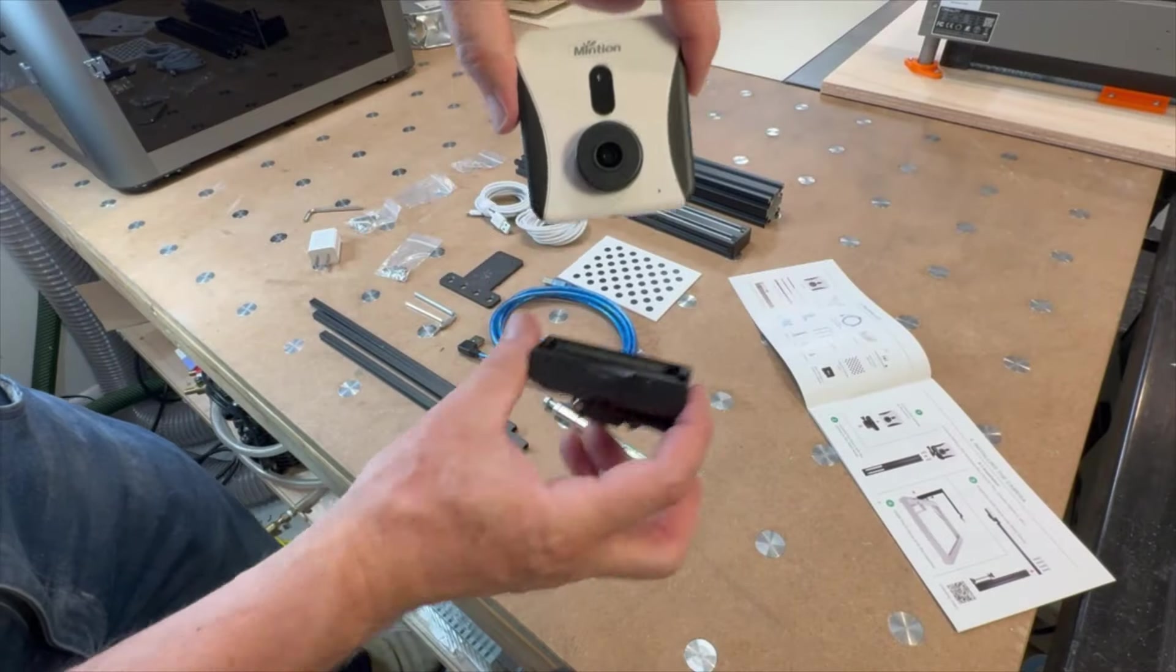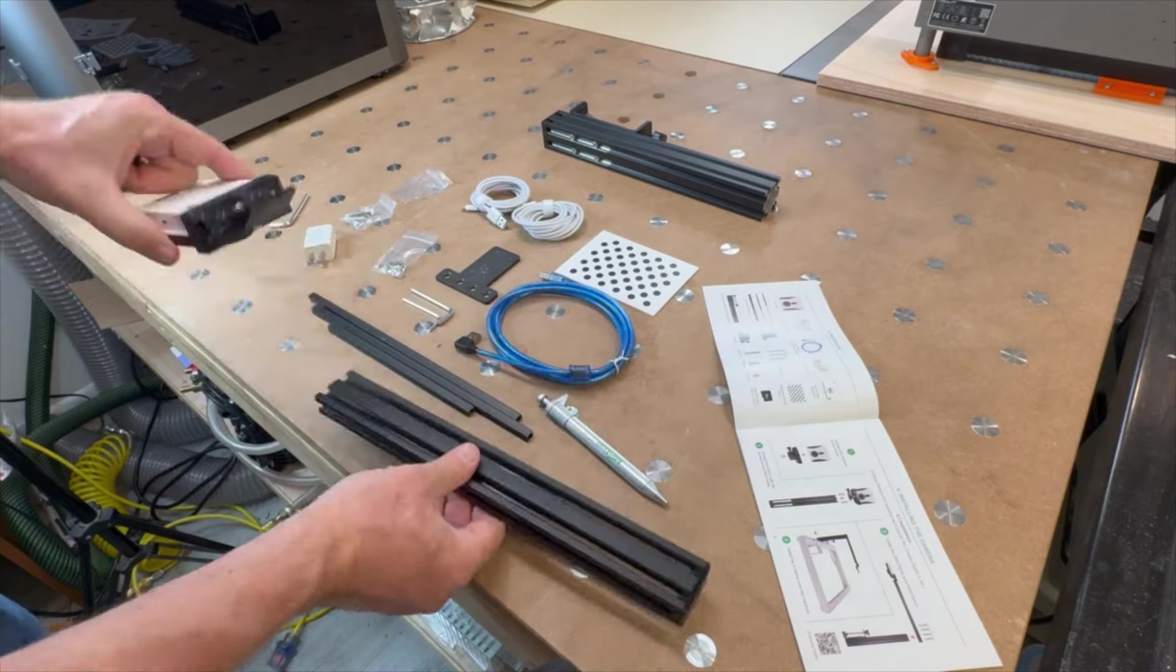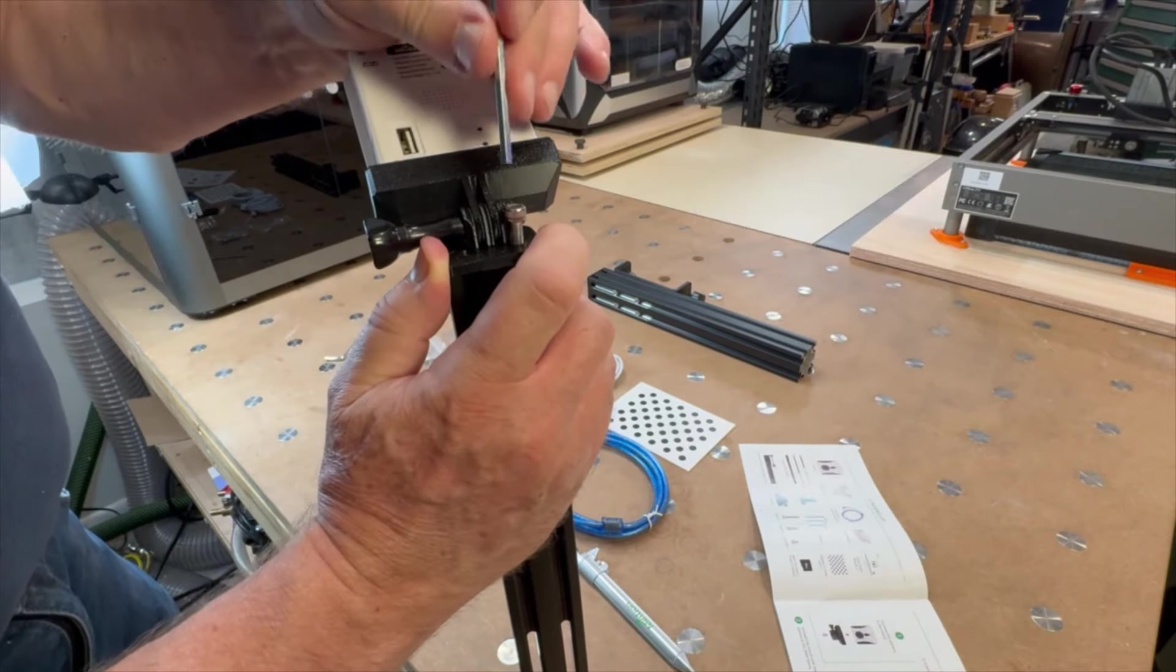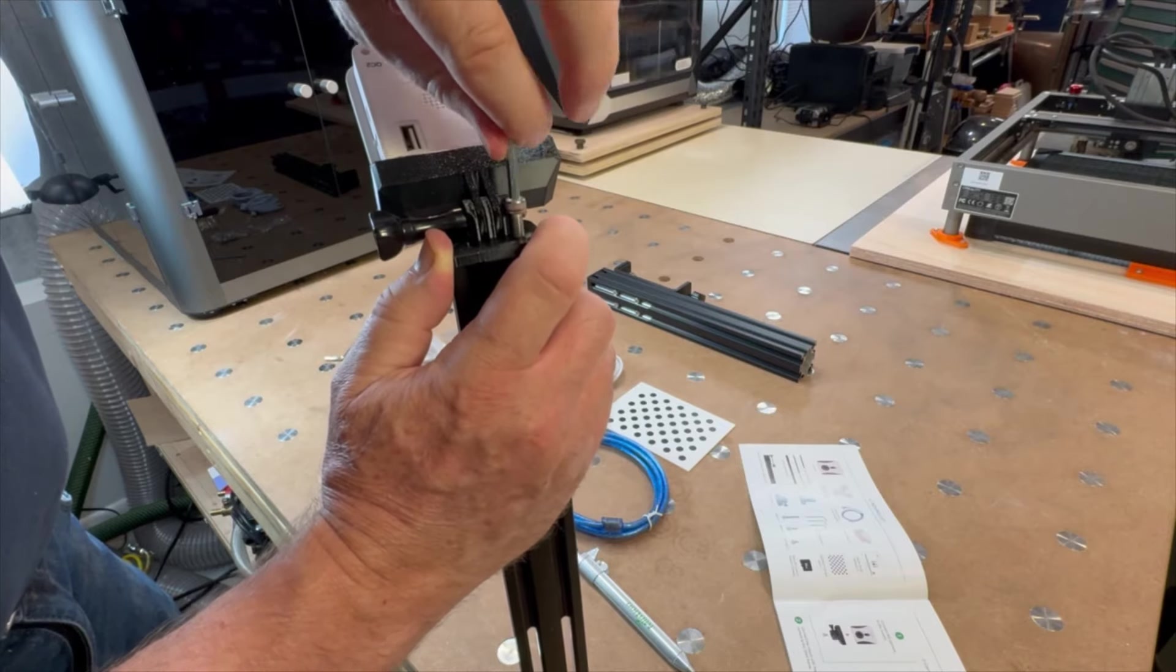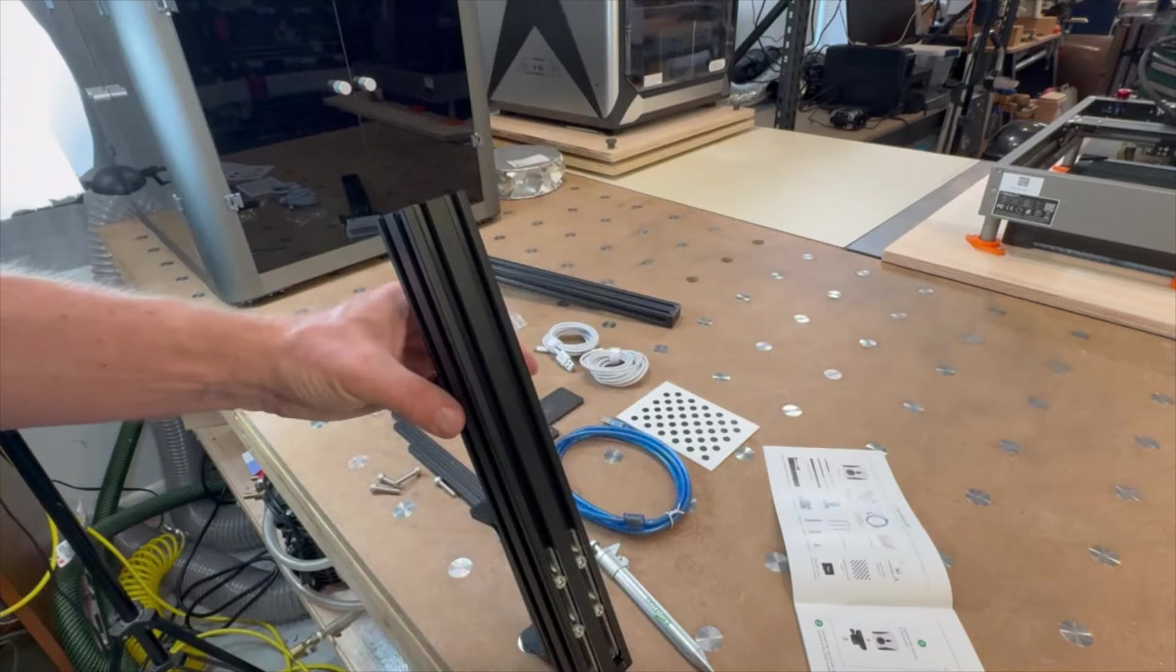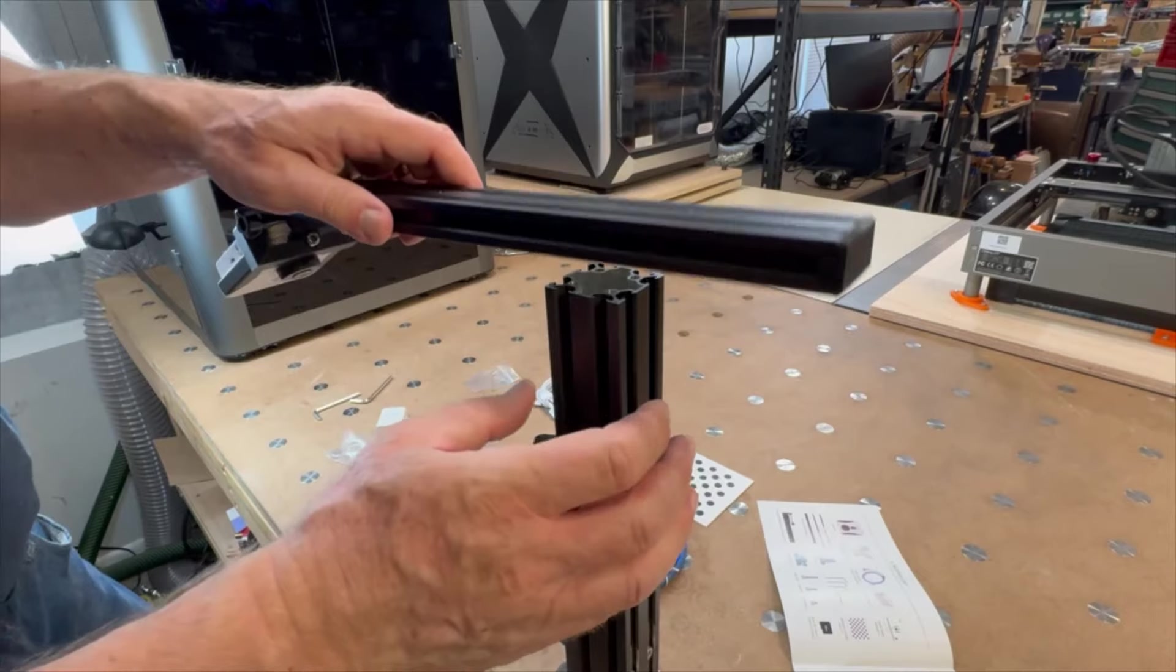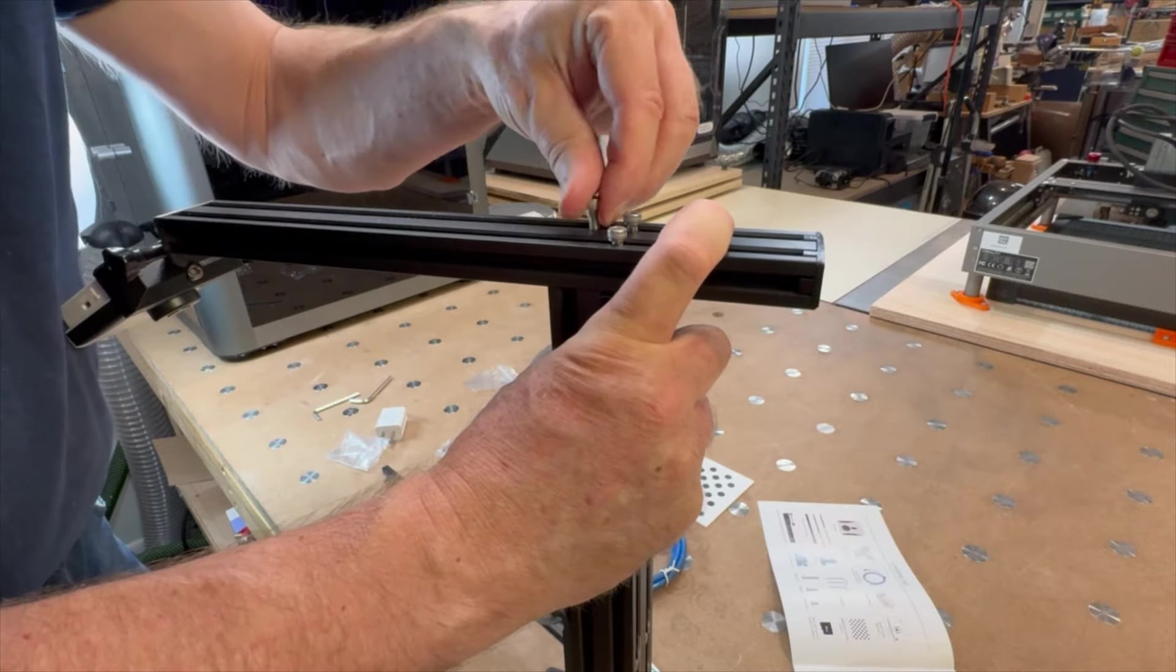First, attach the camera adapter to the camera using a quarter 20 screw. Then attach the camera assembly to the horizontal extruded aluminum rail. It's the one with the two slots using two M5 by 14 millimeter socket head cap screws. Next, attach the horizontal aluminum rail assembly to the vertical rail using four M5 by 25 millimeter socket head cap screws.